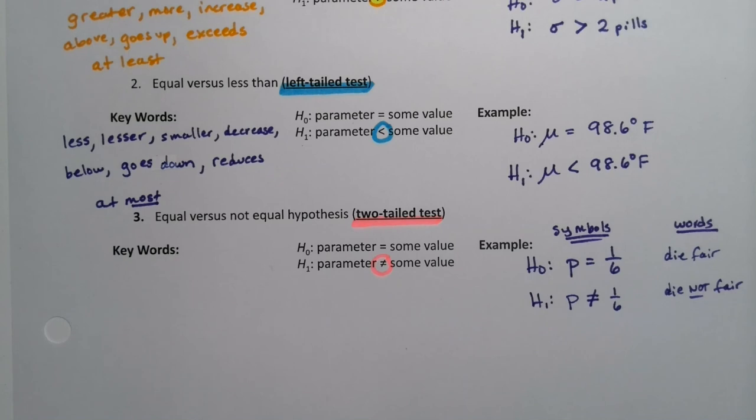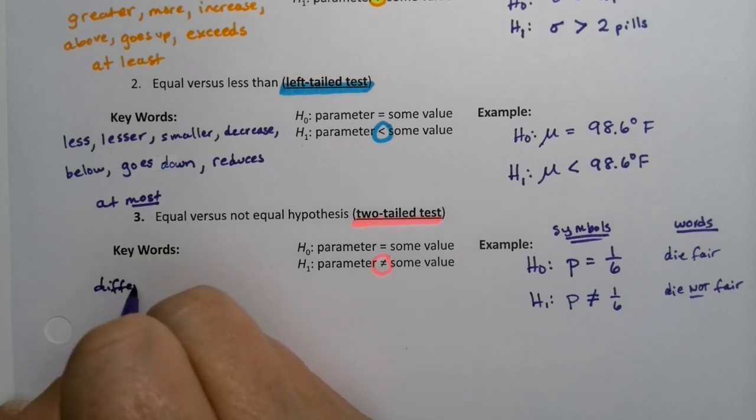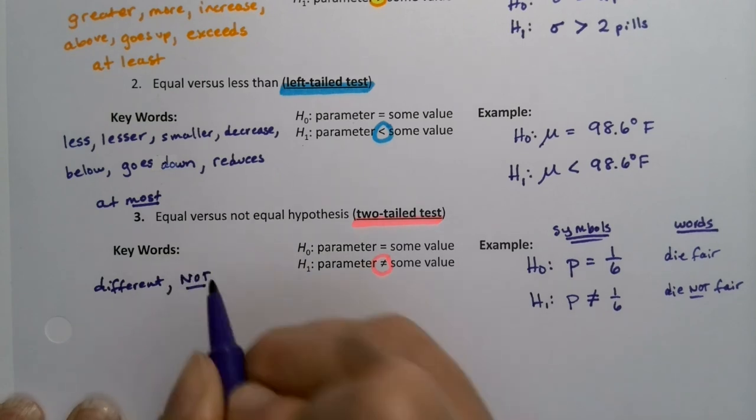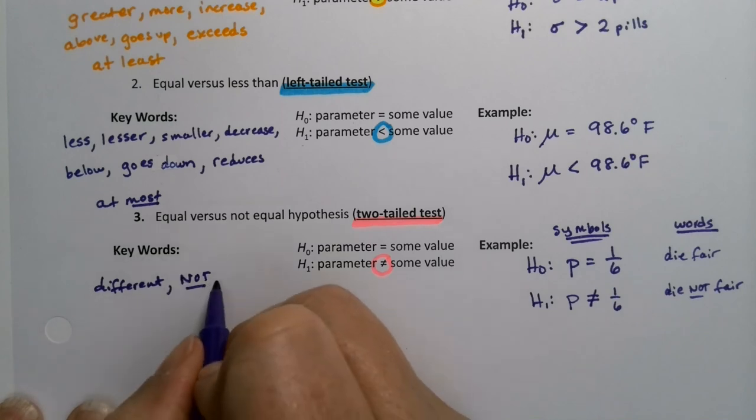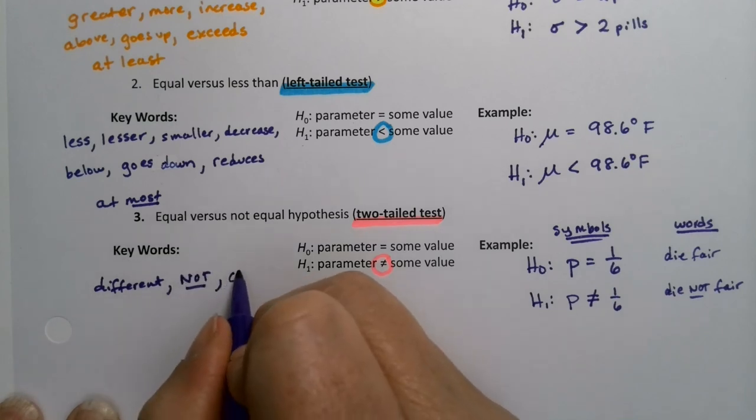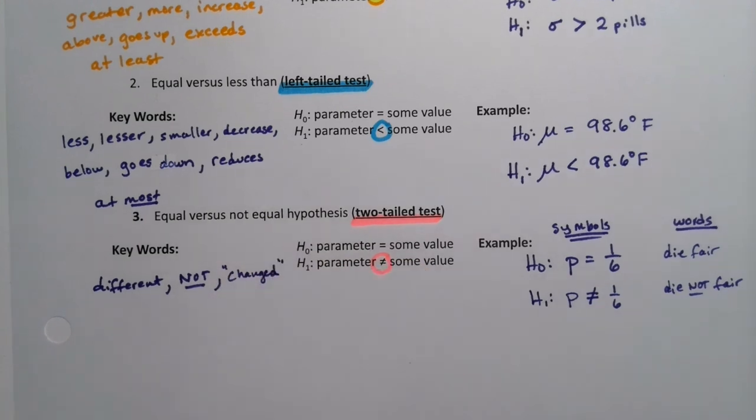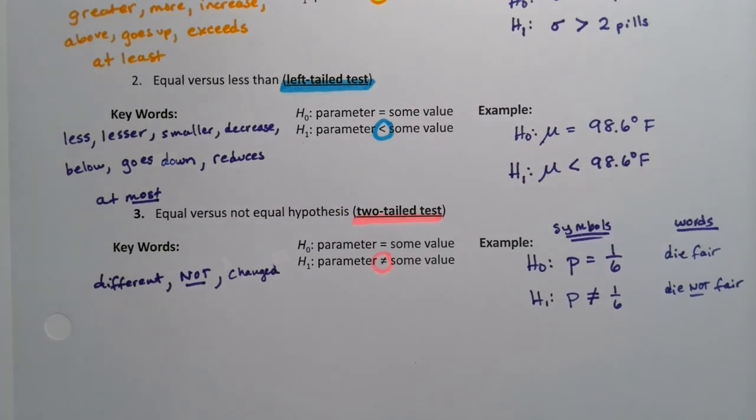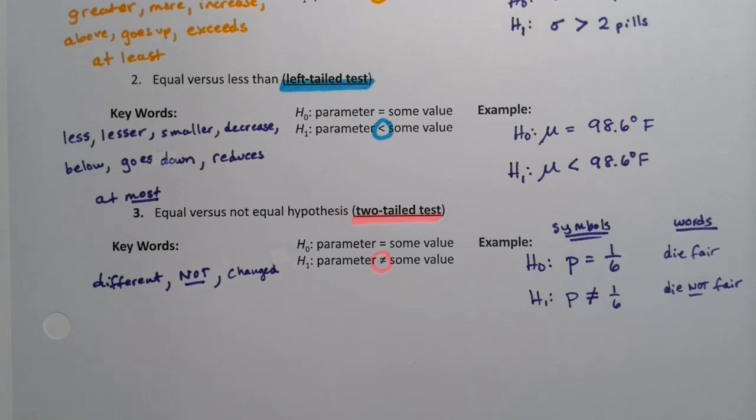So there's one of the big words you saw. Obviously different would be a key one for not equal to. And not - the die is not fair - that's a key word. Changed is another one. There's not a lot of words for different, so it's going to be the hardest one to spot. You can make a little note - the different one is going to be tricky, especially if it's the word not, because it's such a small three-letter word to fit into a giant paragraph. So that'll be a little tricky to find.